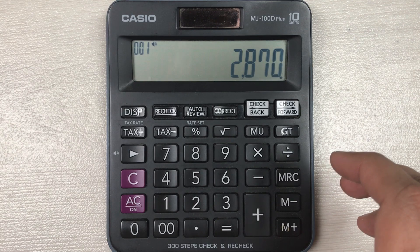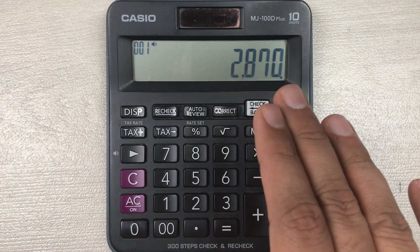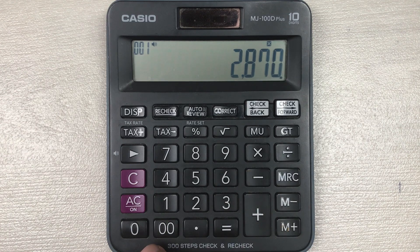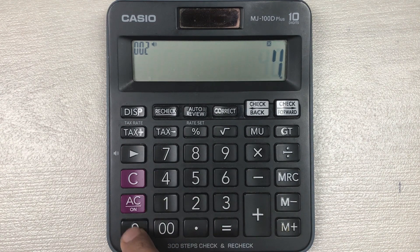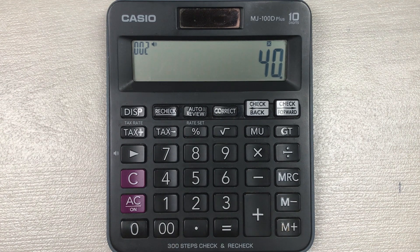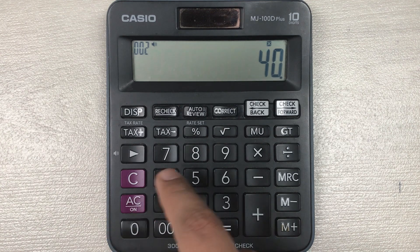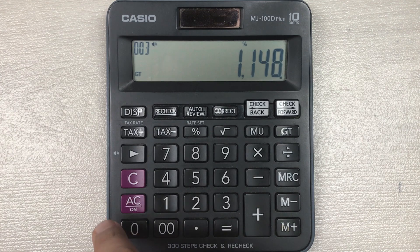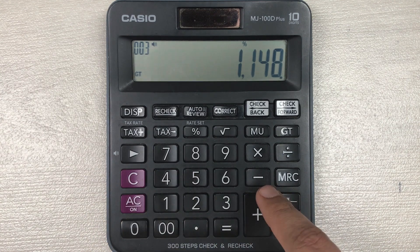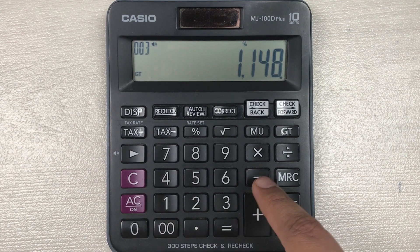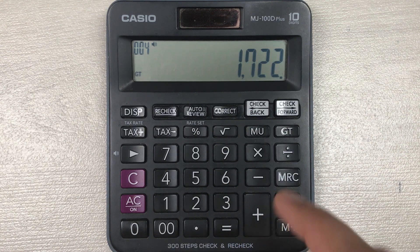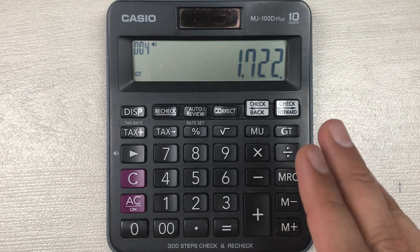So you type 2870, then you press the multiply button, and then you type 40 because we want to find out the 40 percent off. Then you have to press this percentage button, and in the last step you have to press this minus button. So here is our final answer: 1722 is the final price after 40 percent off.